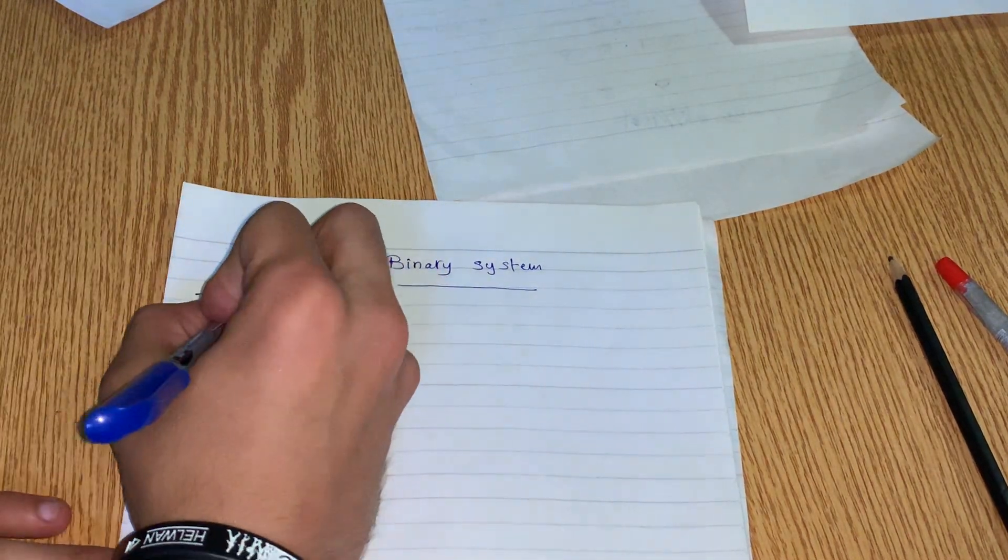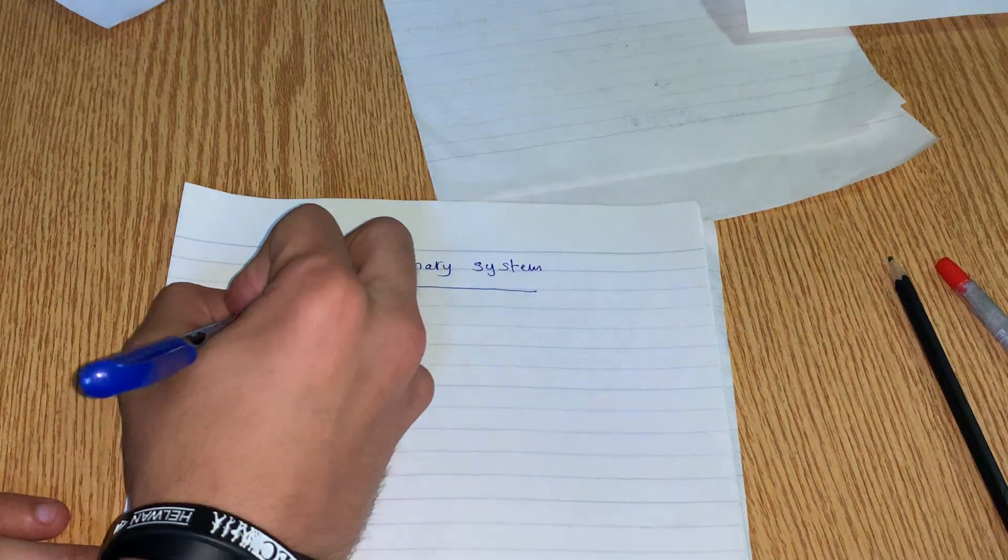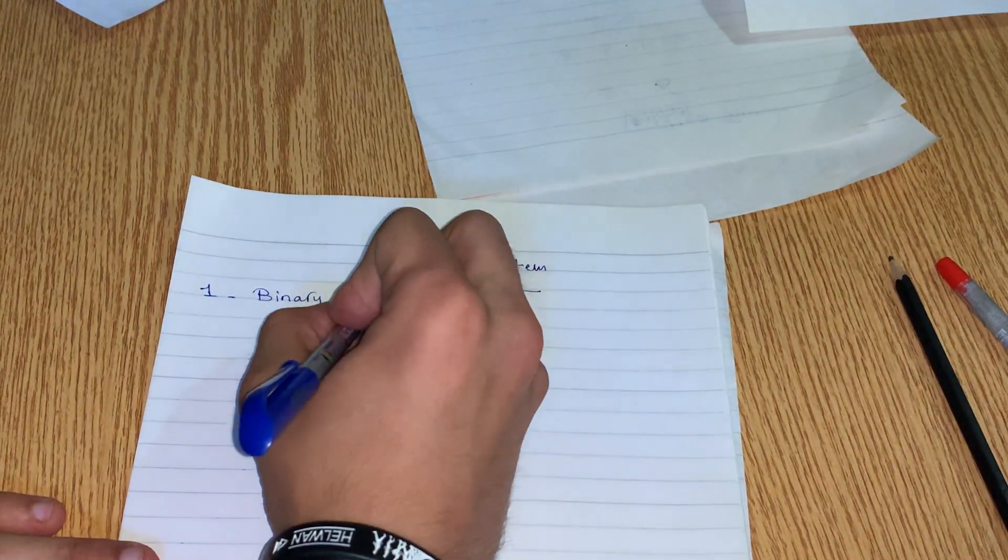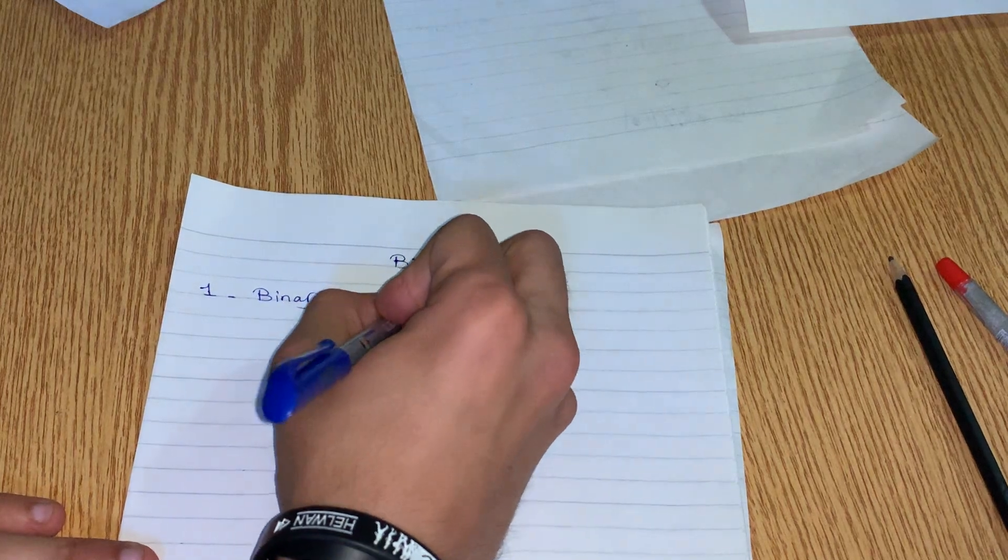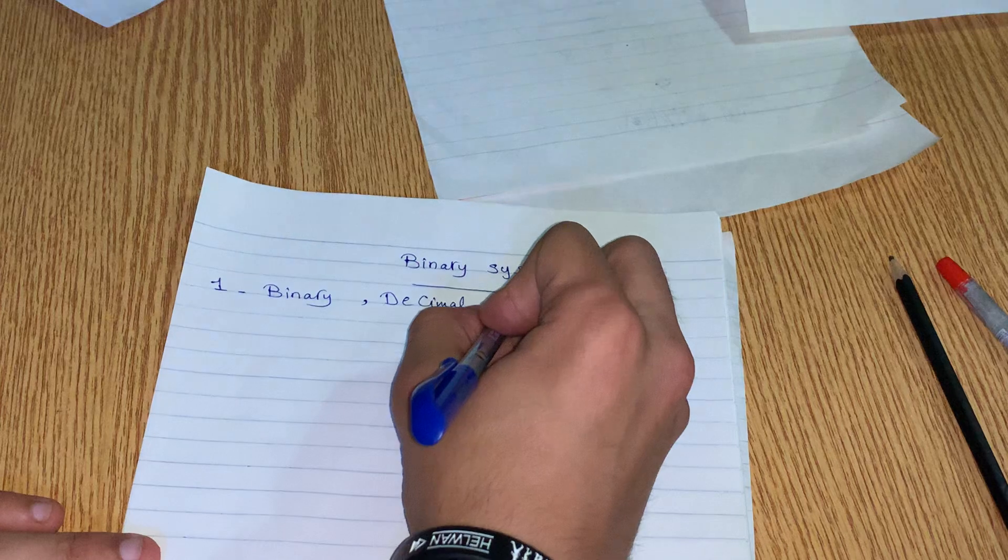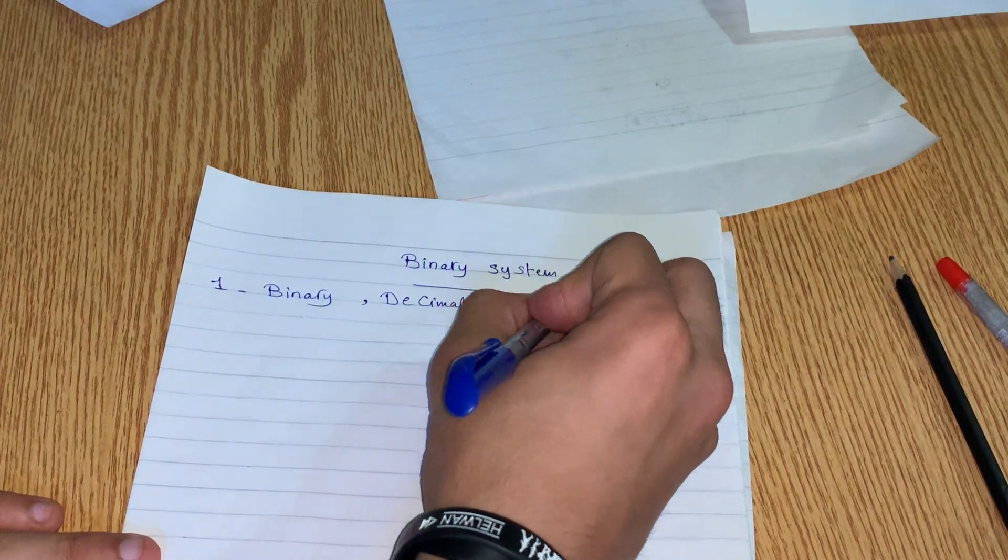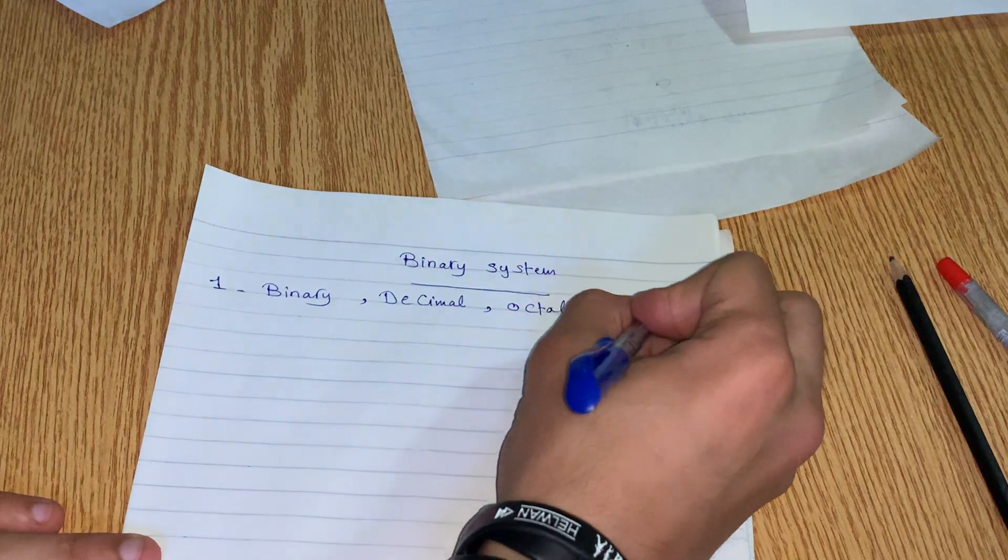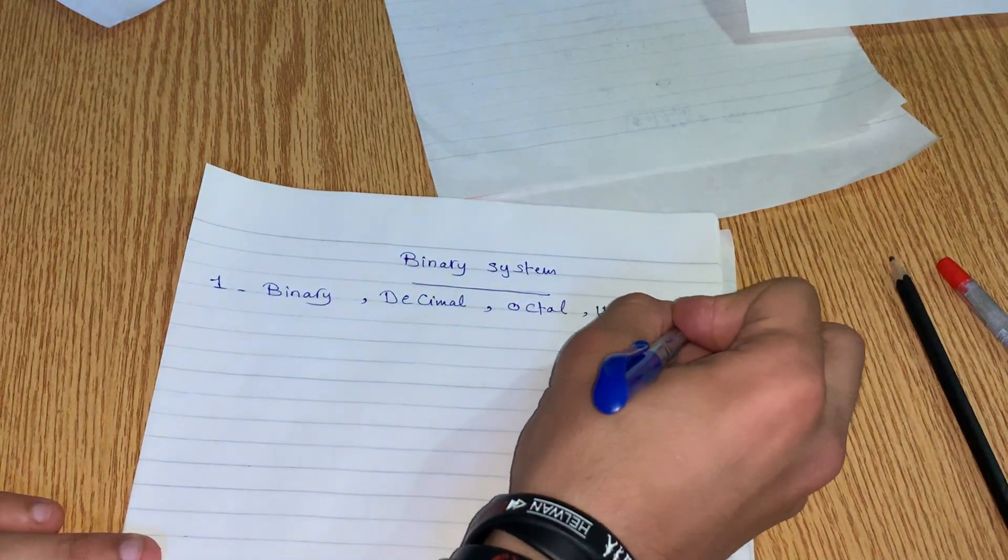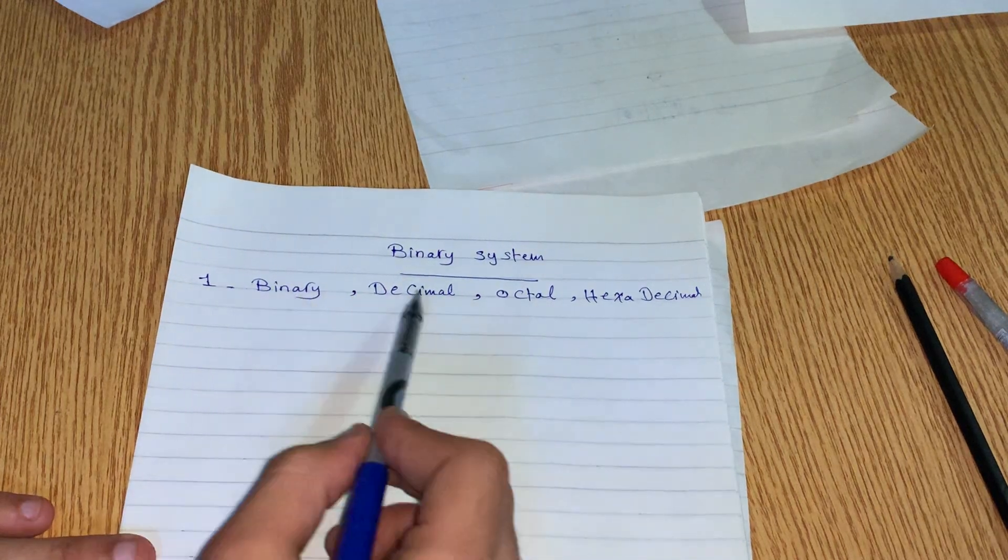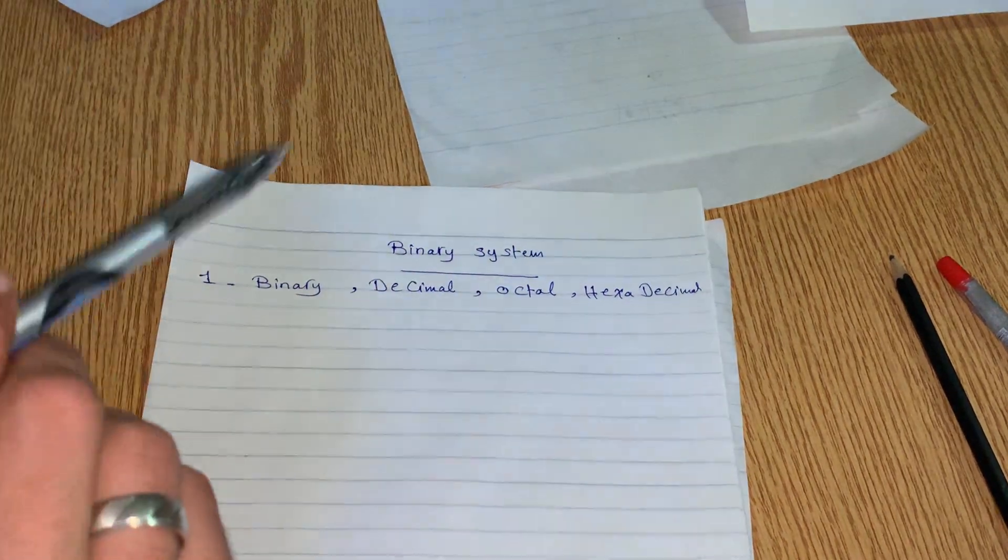The first thing is to talk about the types of the data that I have: binary, decimal, octal, hexadecimal. Okay, decimal, octal, hexadecimal. This should be the first thing. I have binary, decimal, octal, hexadecimal.